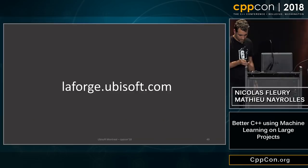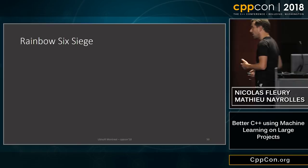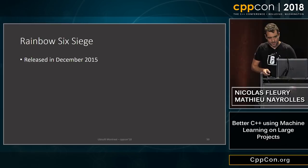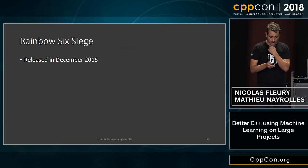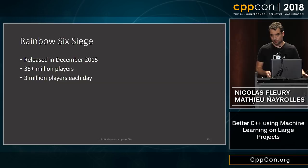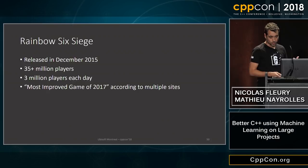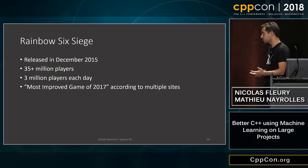Back to Nicolas for statistics on Rainbow Six Siege. Rainbow Six Siege, if you don't know the game, is a first-person shooter with a main mode of five-versus-five, released online in December 2015. The game is still very alive — we have reached over 35 million players, with around three million playing each day. Multiple gaming sites elected it the most improved game of 2017.